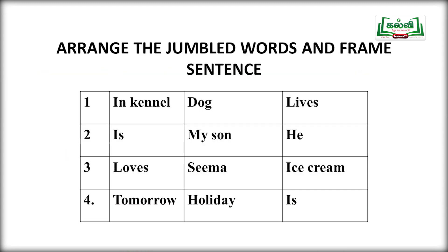Arrange the jumbled words and frame a sentence. First: In kennel dog lives — Dog lives in kennel. Second: He is my son he — He is my son. Third: Loves Seema ice cream — Seema loves ice cream. Fourth: Tomorrow holiday is — Tomorrow is holiday.